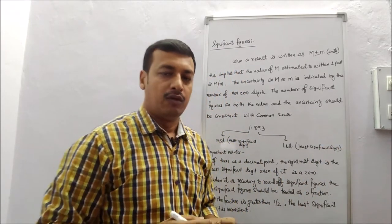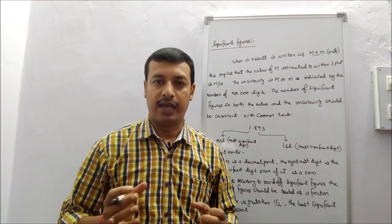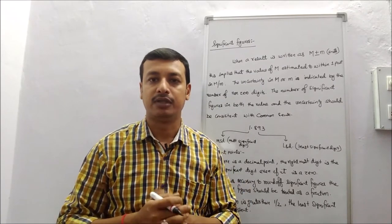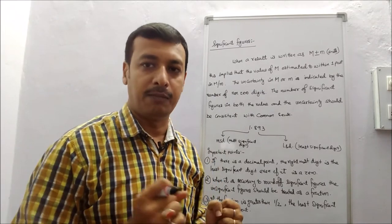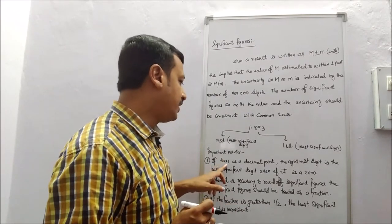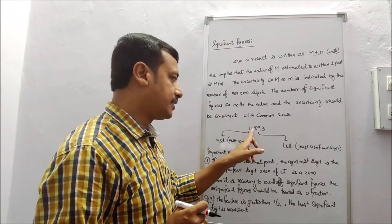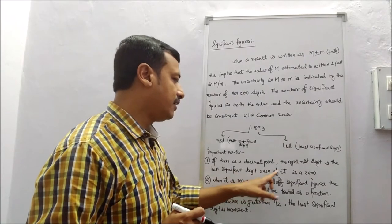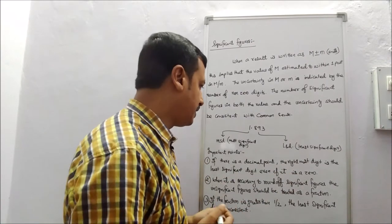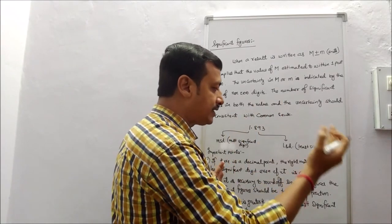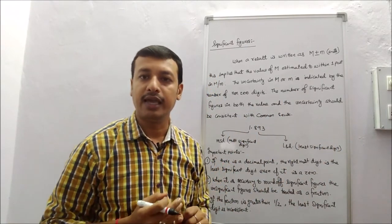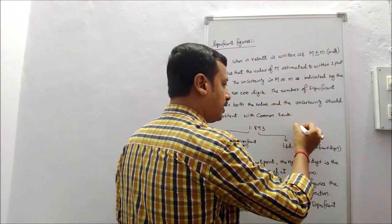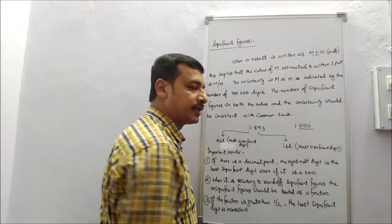Now, what are the important points for finding MSD and LSD? First: if there is a decimal point, the rightmost digit is the least significant digit, even if it is a zero. That means the digit on the right side of the decimal point is the LSD. Even if the value is 1.00, that zero is also called the LSD.